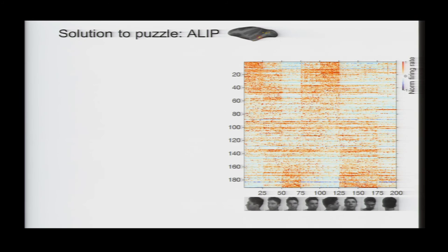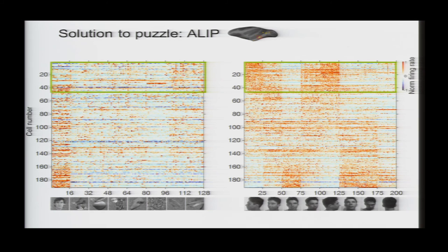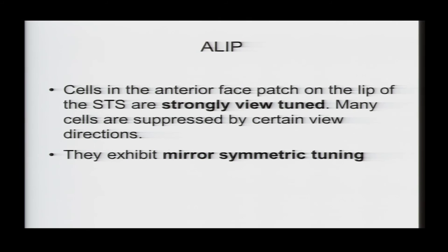So, these cells that like profile faces were not activated by the frontal faces in our screening set, and that explains the puzzle in AL. So, here's a movie of one of these profile-selective cells from AL. So, cells in AL are strongly view-tuned, and they exhibit this mirror symmetric tuning to profile views.